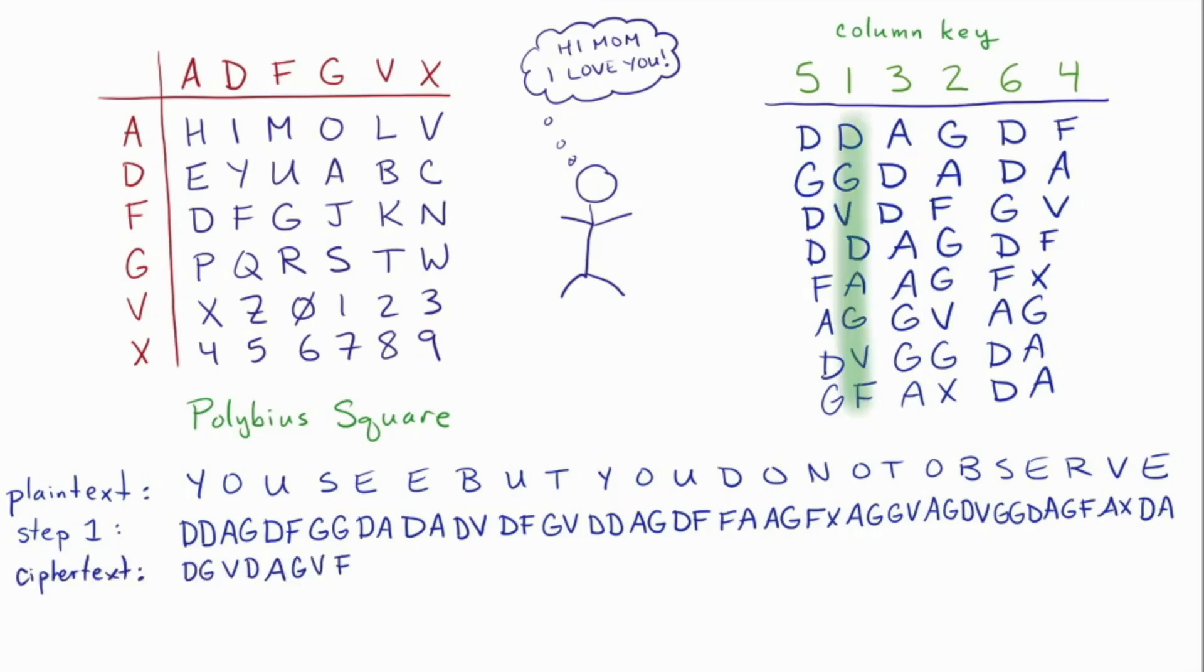And then what I'm going to do is I'm going to read them in the order indicated by the column. So first I'm going to read column one, and I'm going to read them top to bottom. So my ciphertext now starts D, G, V, D, etc. And then I put the second column into the ciphertext, and so on and so forth. And that's how you get the ciphertext for the ADFGVX cipher.